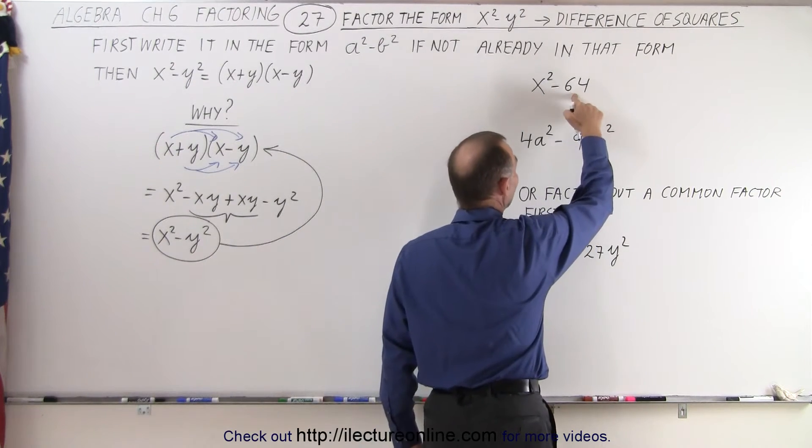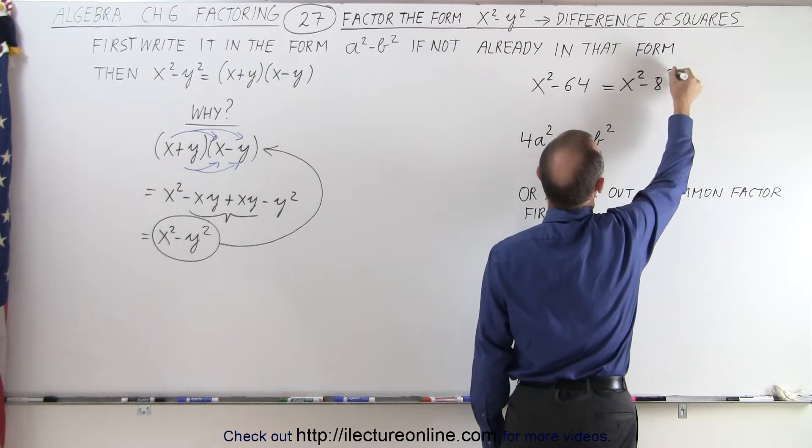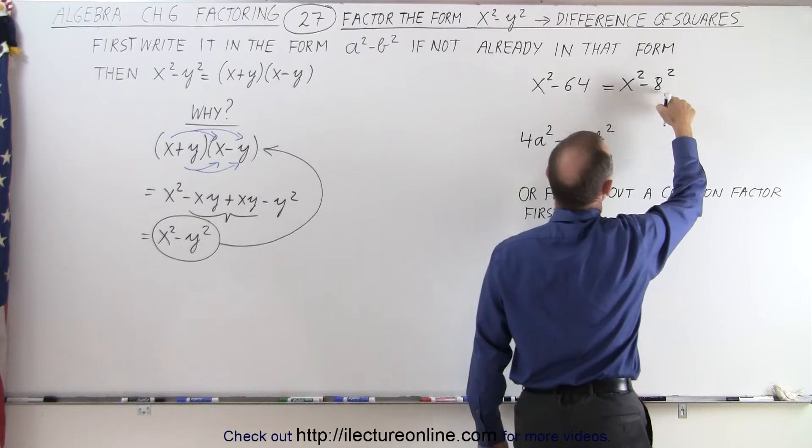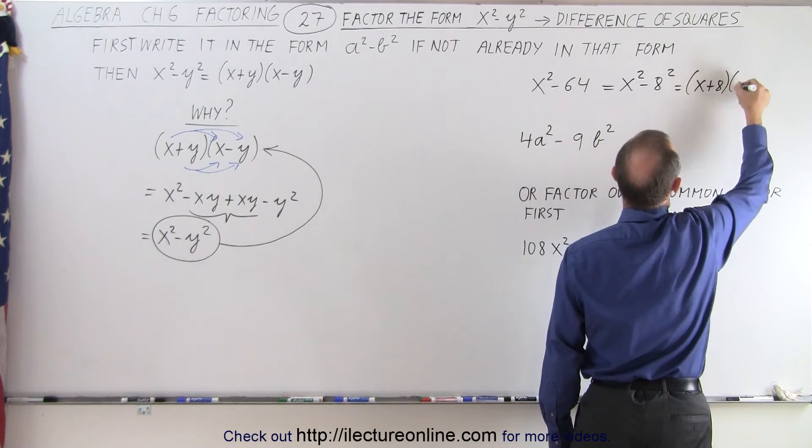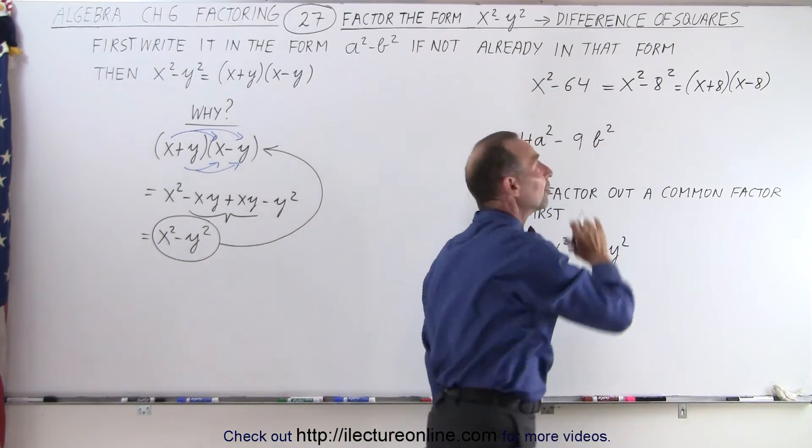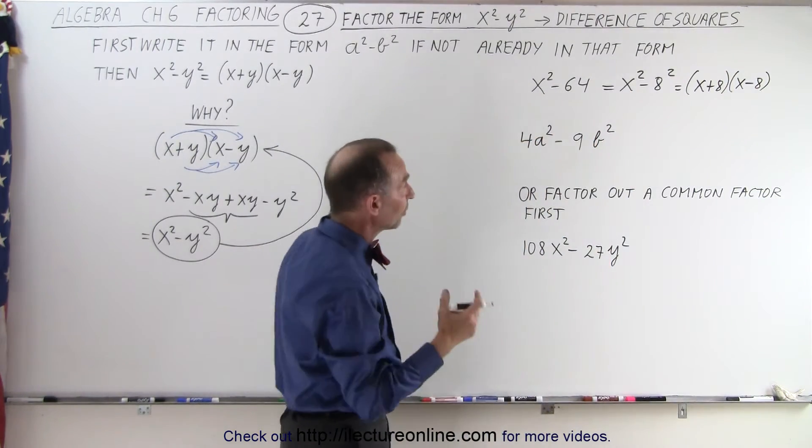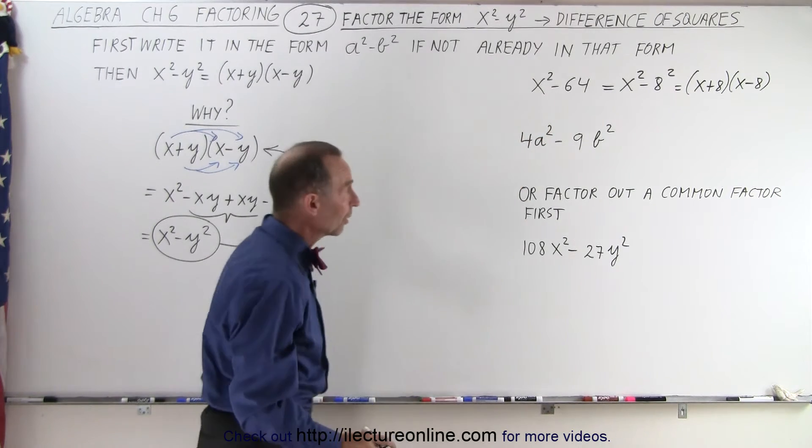64 is basically 8 times 8, so this can be written as x squared minus 8 squared. And once you've written it like this, now you can write it as x plus 8 times x minus 8. So this is the factored form of this. You may not have realized it until you realized that 64 is 8 squared, so I can write it like the difference of squares.